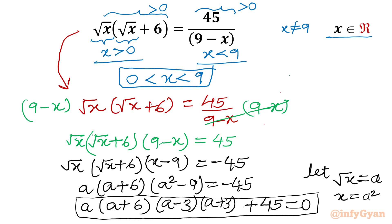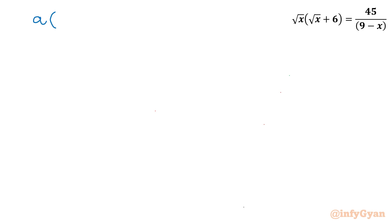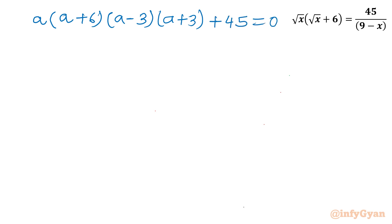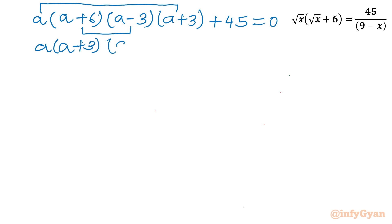We need to find four values of a, remembering our substitution root x equals a will be applied at the end. Moving 45 to the left side: a times a plus 6 times a minus 3 times a plus 3 plus 45 equal to 0. Regrouping, consider a with a plus 3 together, and a plus 6 with a minus 3 together: a times a plus 3 times a plus 6 times a minus 3 plus 45 equals 0.